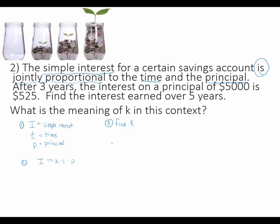So my third step in any variation problem is that finding of K. And I'll do that by substituting numbers that go together. So I'm going to move on to the second sentence in my problem, where it says, after three years, the interest on a principal of $5,000 is $525.